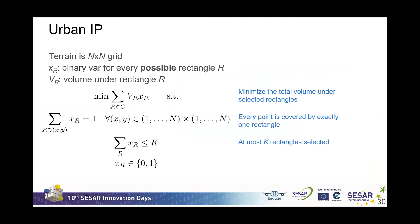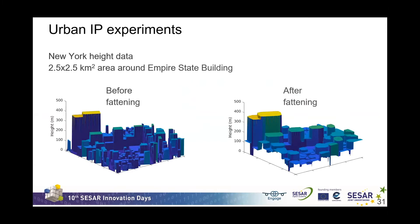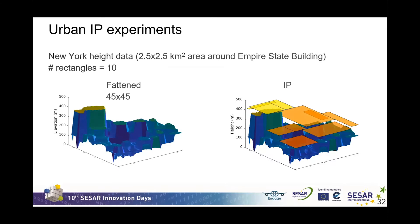We formulated our urban problem as an integer program. We create a binary variable for every possible rectangle; unlike terrain partitioning, we no longer have infeasible rectangles, so we enumerate all rectangles without checking height differences. The objective is to minimize the total volume under the selected rectangles, with constraints that every point is covered by exactly one rectangle and at most k rectangles are used. We took real data for New York City around the Empire State Building, fattened all buildings by 50 meters, and ran the IP to cover a 45 by 45 pixel area with 10 rectangles.